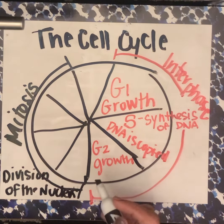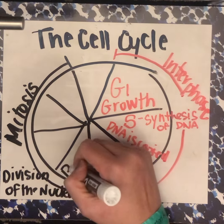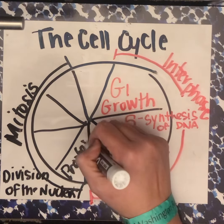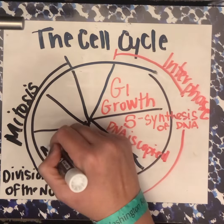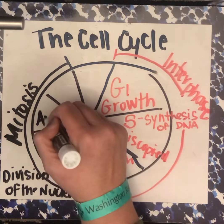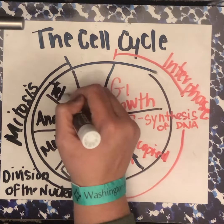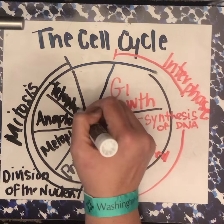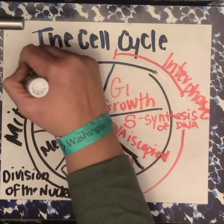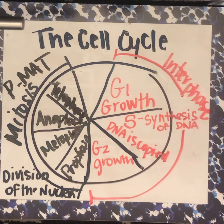The first part of mitosis is prophase, then metaphase, then anaphase, and telophase. A good way to remember this order is PMAT — just a little way to remember prophase, metaphase, anaphase, and telophase.